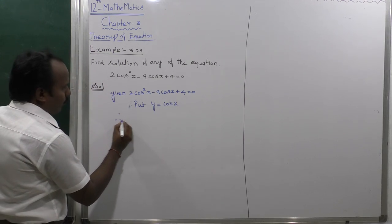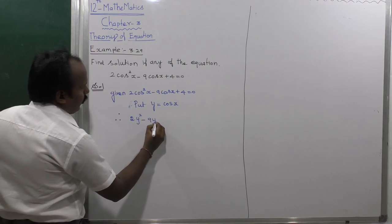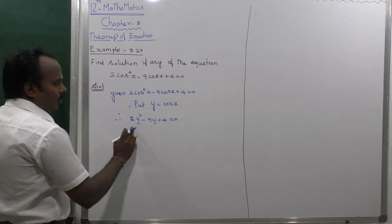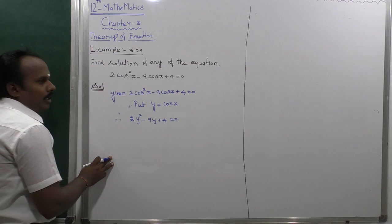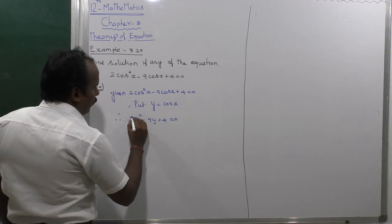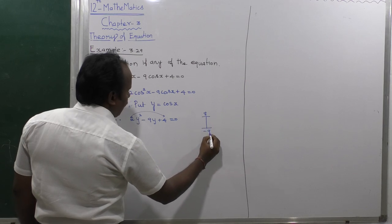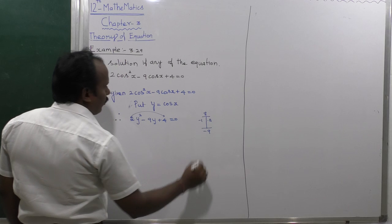Put y = cosx. Therefore 2y² - 9y + 4 = 0. This is a quadratic equation, so it's easy to find the roots. Multiple of these two terms is 8, addition is 9, so 1 and 8.